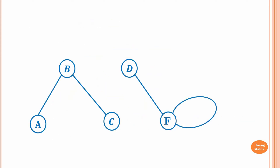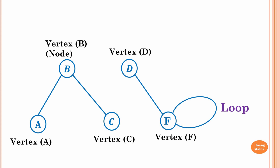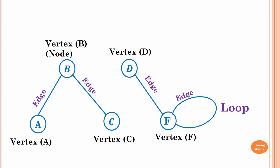Next, we have town A connecting to B, B connecting to C, and towns D and F connecting together. In F there is a loop. This is also called a network because we have vertices and edges. In F, the loop counts as only one edge but contributes two degrees.